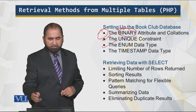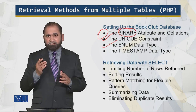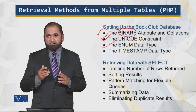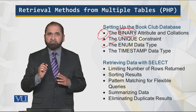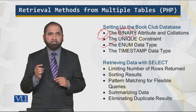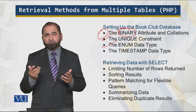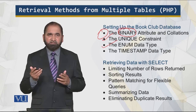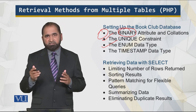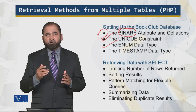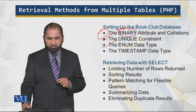Then there is the ENUM data type — enumeration. What it means is that in a column, which is a text column, we can only have certain strings. For example, in a gender column, we can only have male or female. Or for a movie type column, we can only have fiction, comedy, and so on. This is the type we assign to columns.